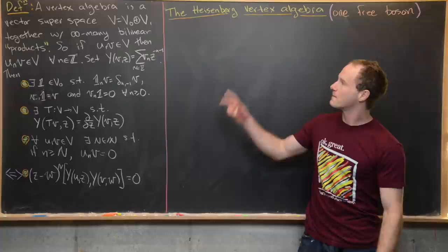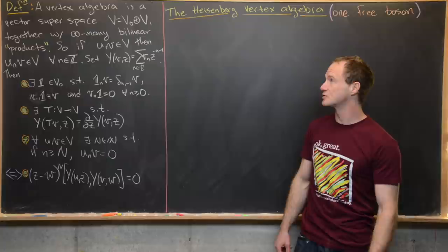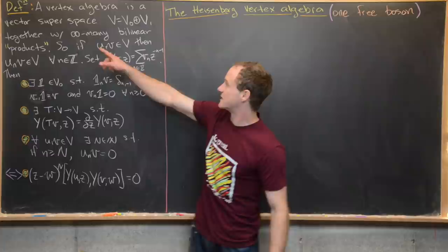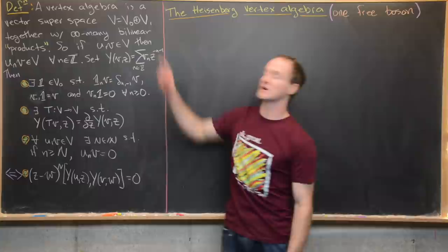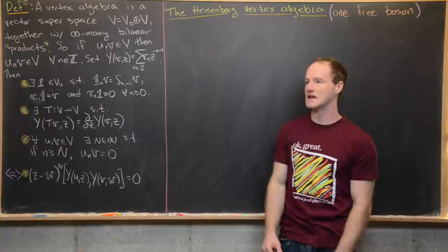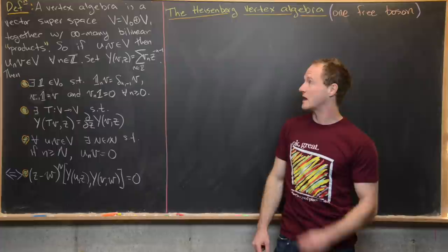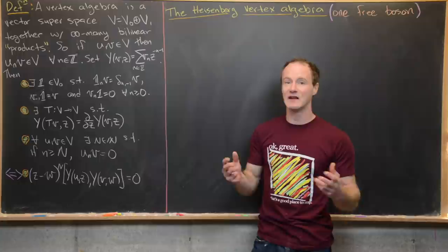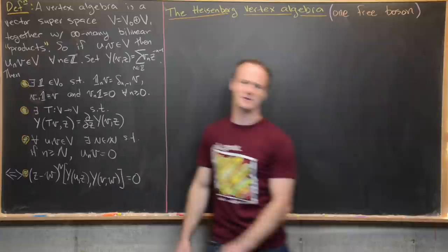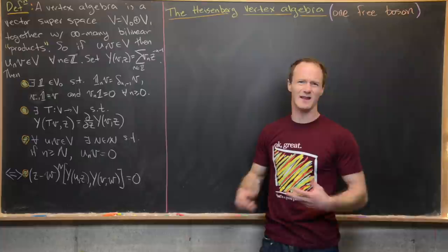Before we do that, I want to recall the definition of a vertex algebra — sometimes a vertex super algebra because we're using a super space here. So a vertex algebra is a vector super space V, which decomposes into a direct sum V₀ plus V₁, where these are even and odd vectors. A sum of an even and odd vector is neither, so it's non-homogeneous. Together we have infinitely many bilinear products: for U and V in V, we can multiply them infinitely many times, indexed by the integers, written as U_n V, an element of V.